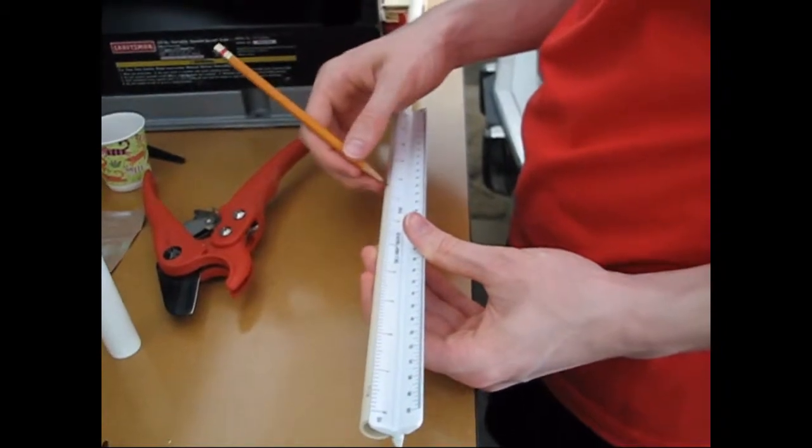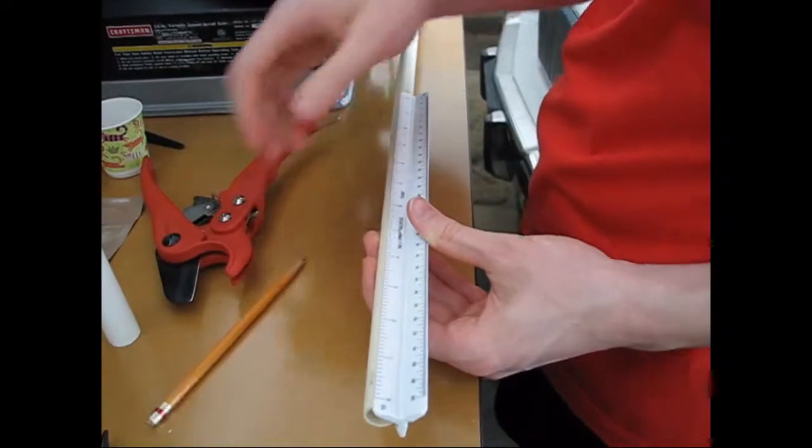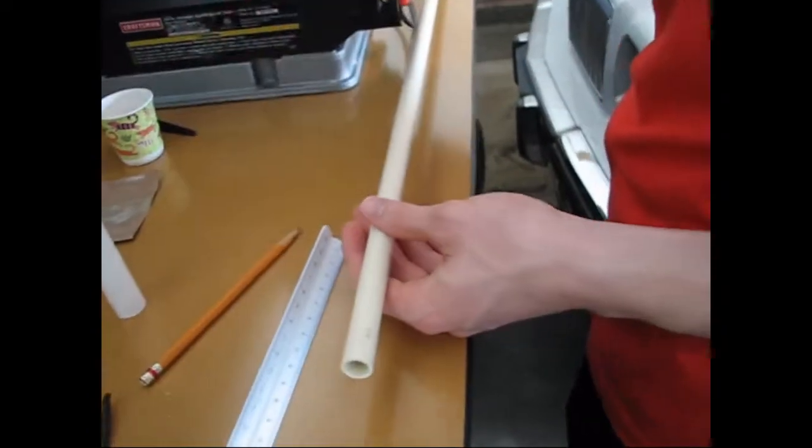Mark off your length of barrel using 8 inches of CPVC and mark it with a pencil or something. It helps to use a ruler when measuring any pipe and then just cut it off.